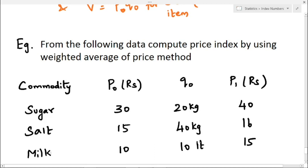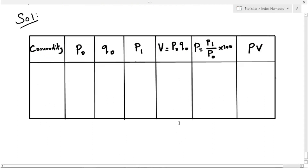Using these values we have to find the price index by the weighted average of price relative method. For that we form a table with the columns commodity, P0, Q0, P1, and we need to find V, capital P, and PV — because the formula is summation PV divided by summation V.